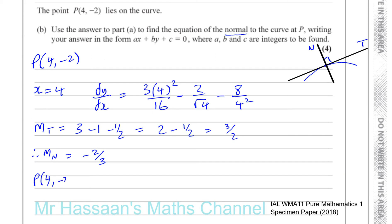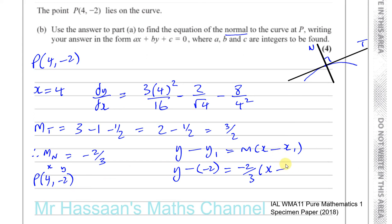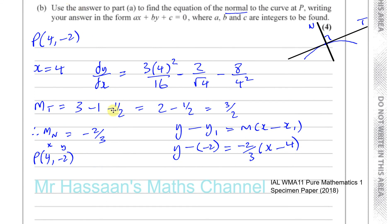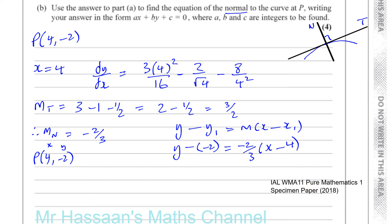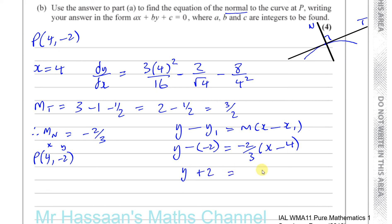Now we find the equation of the line using point P(4, −2) and gradient minus 2/3. Using y minus y₁ equals m times (x minus x₁), we substitute: y minus (−2) equals minus 2/3 times (x minus 4). So y plus 2 equals minus 2/3 times (x minus 4). Multiplying both sides by 3 gives 3(y plus 2) equals minus 2(x minus 4), which expands to minus 2x plus 8.